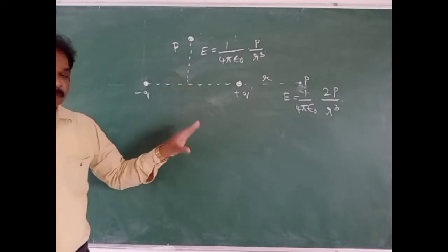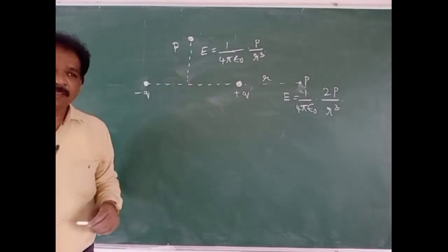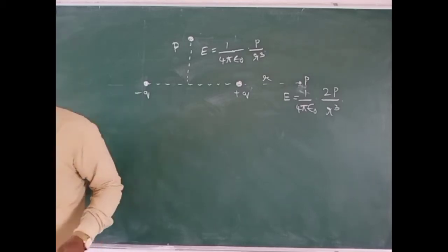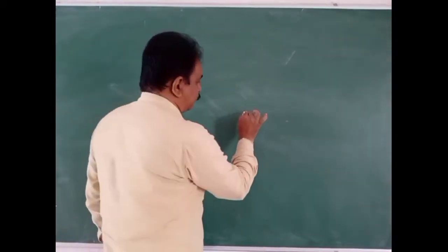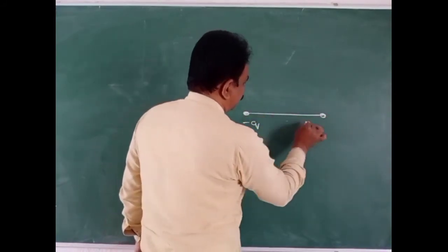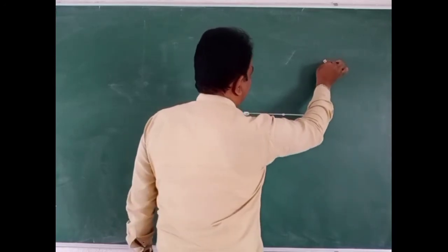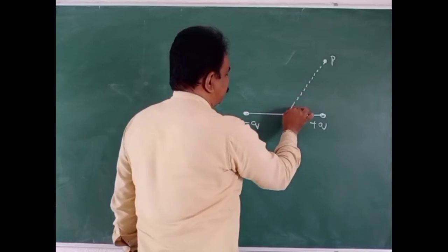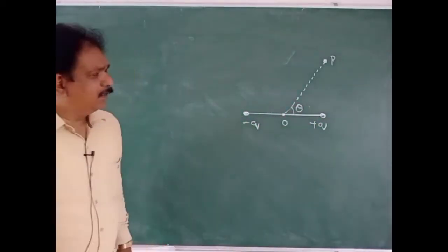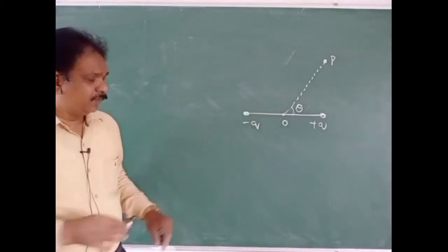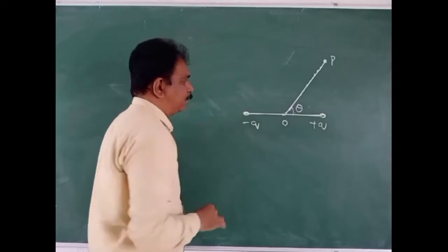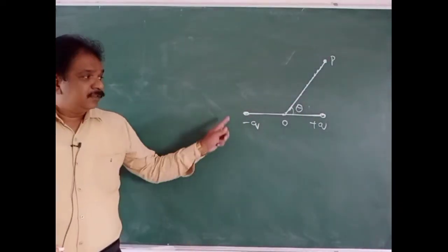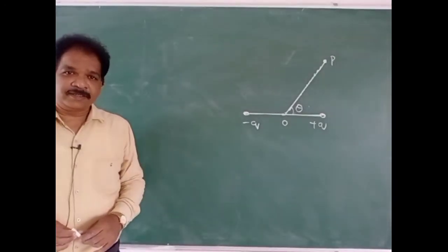Now, if the point is not on the axial line and not on the equatorial line, what formula will we use to find the electric field intensity? The point is not on the axial line and not on the equatorial line. This is the dipole and this is the center of the dipole. The line joining the point and the center of the dipole makes an angle theta with the axis of the dipole.